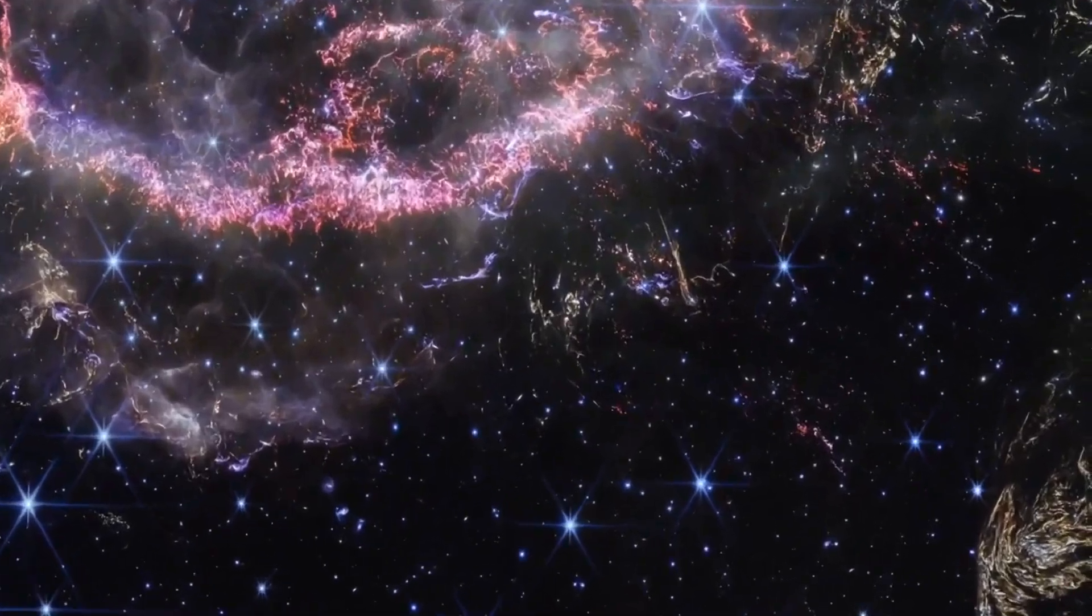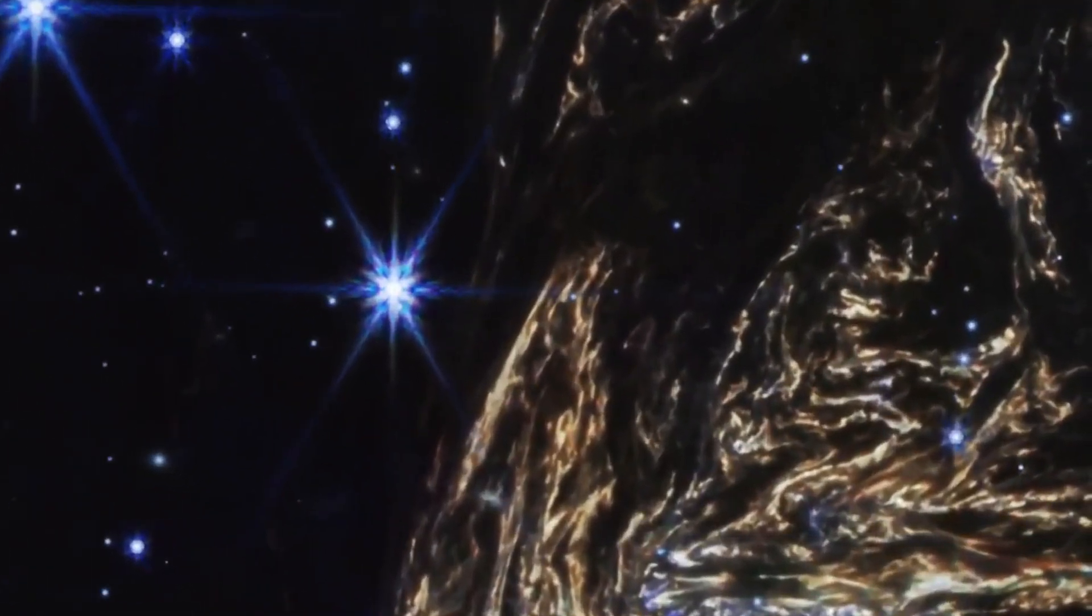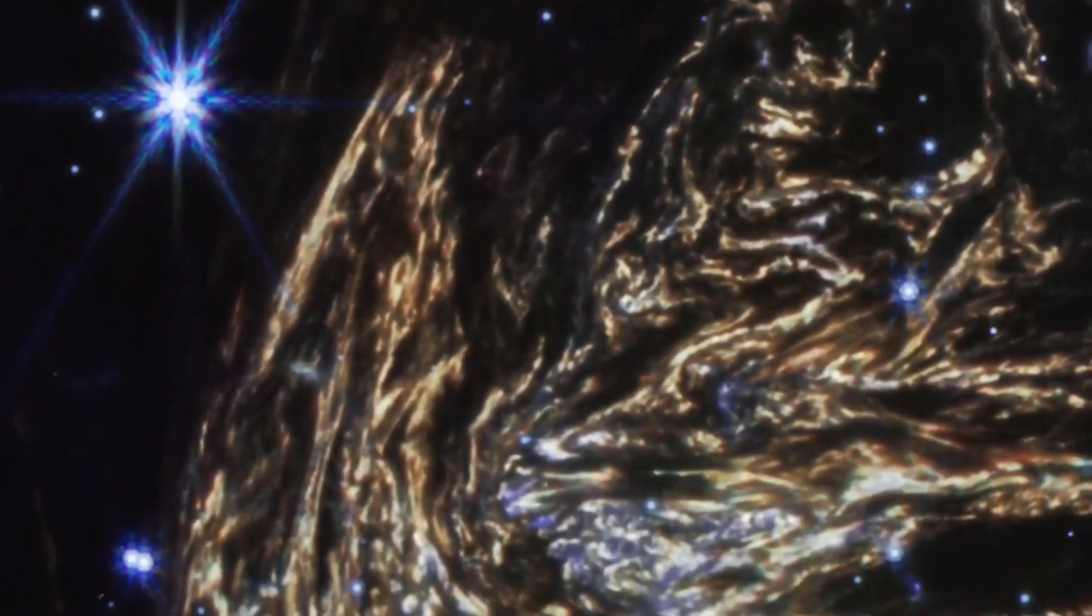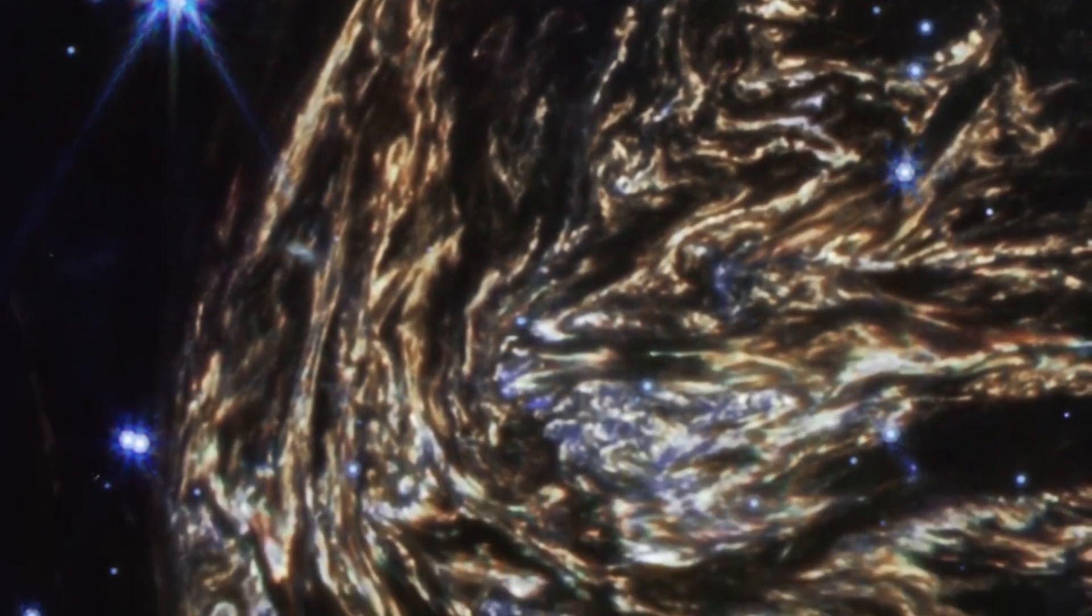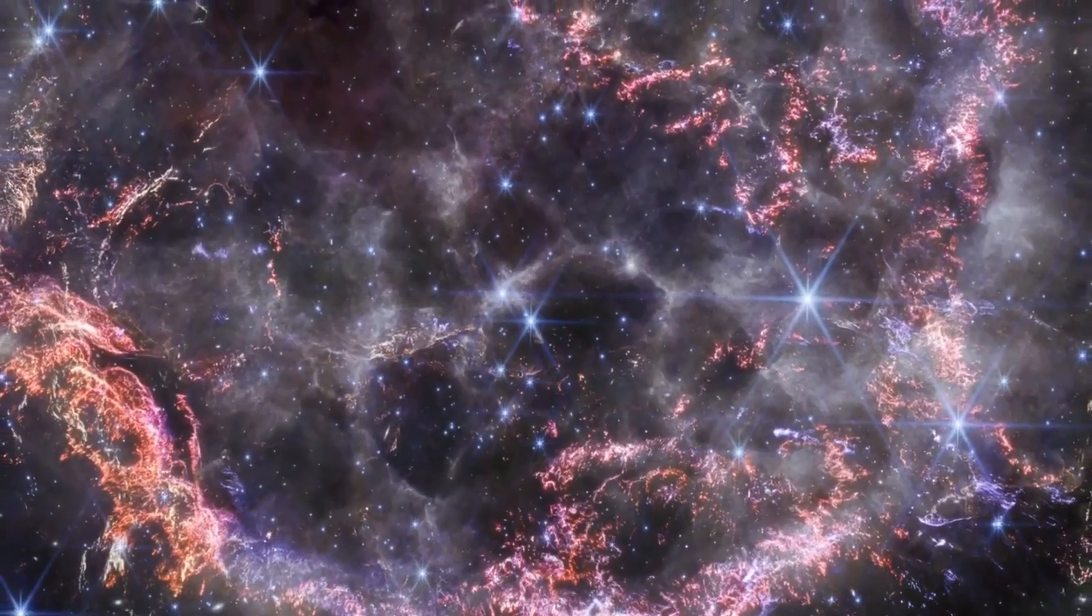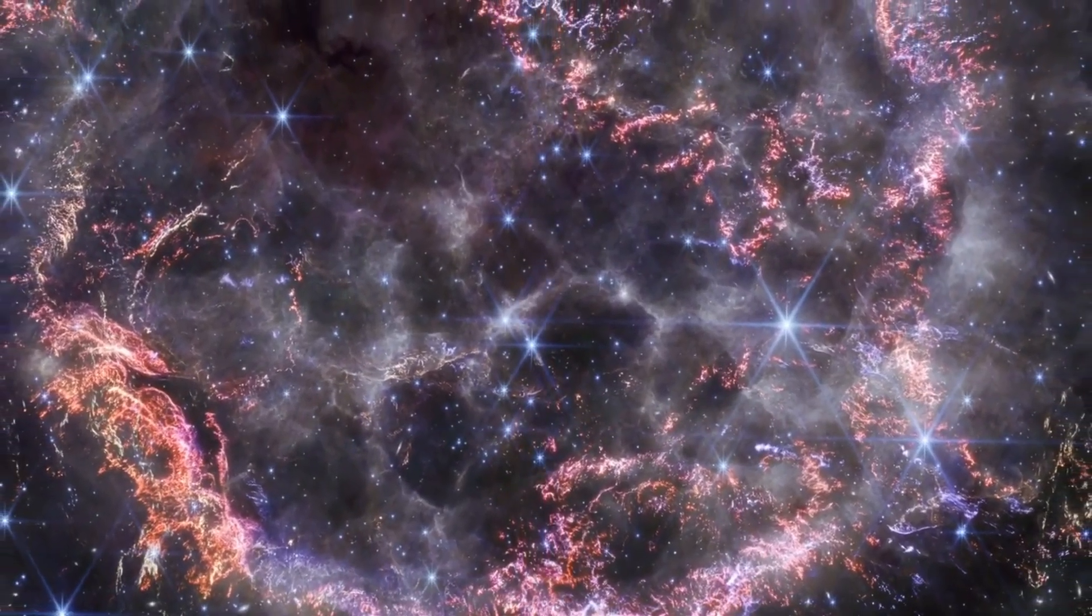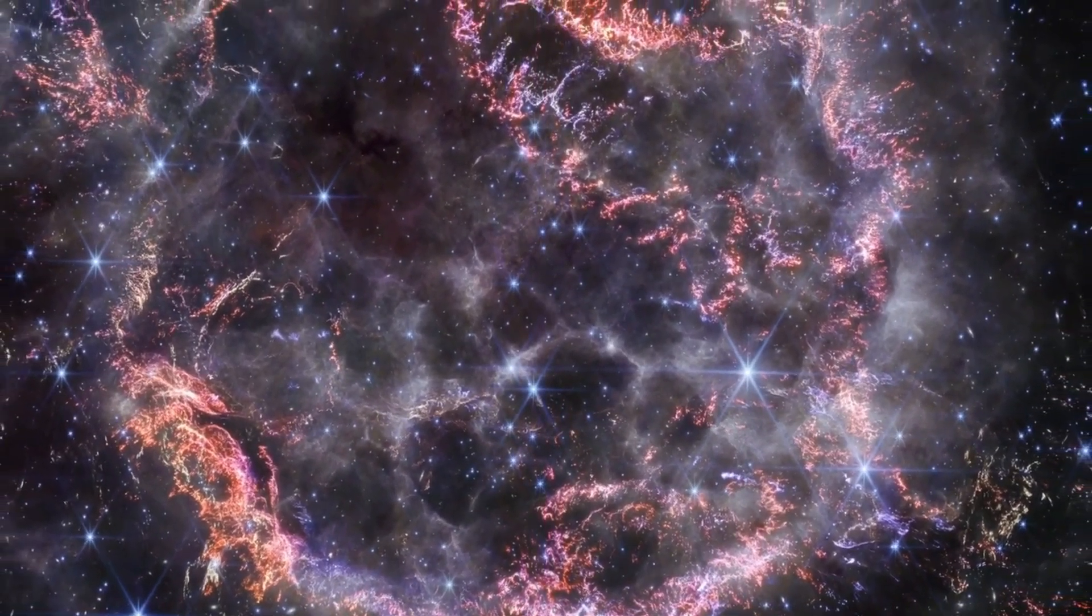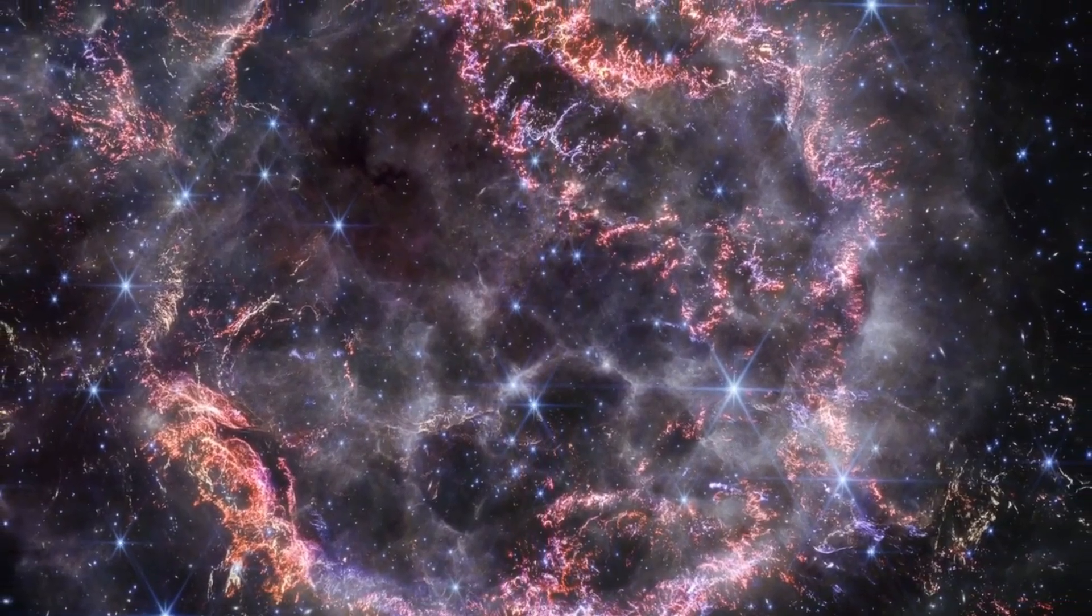The eye-catching colors you see in the image of Cassiopeia A are literally a treasure trove of scientific information for astronomers. Scientists are beginning to uncover the secrets these colors reveal. If you look closely, especially toward the top and left side, there are curtains of material that look orange and red. These colors are emitted by warm dust in the remnant.